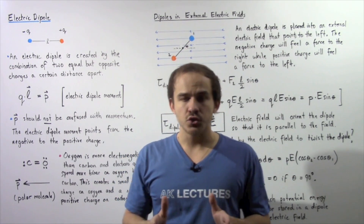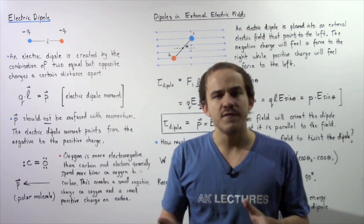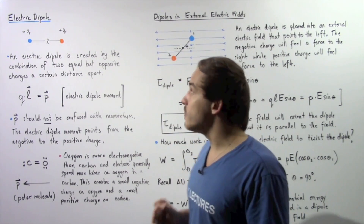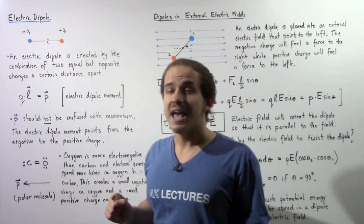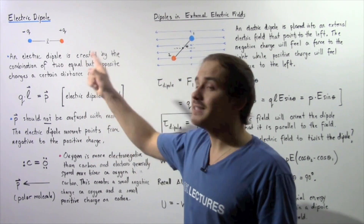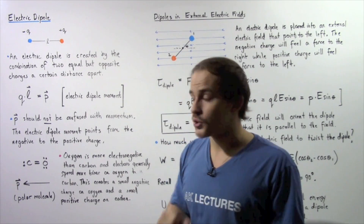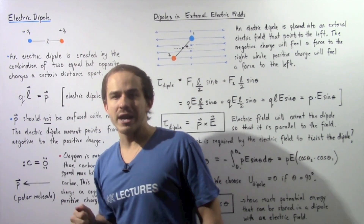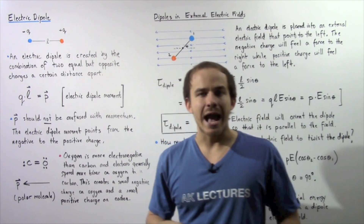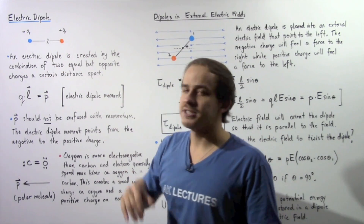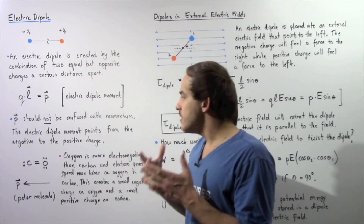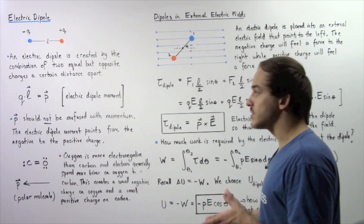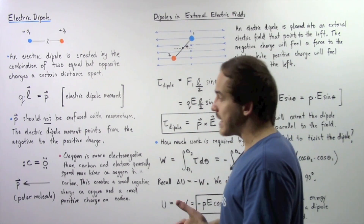On the other hand, in chemistry this convention is reversed. In chemistry, the electric dipole moment begins on the positive end and ends on the negative side, so it would point in the negative direction along the x-axis for this particular case. In this lecture, we're going to stick to the physics convention.